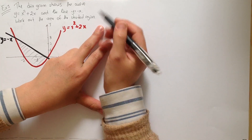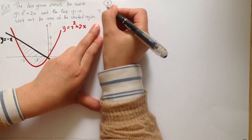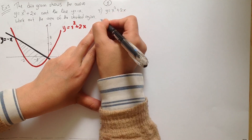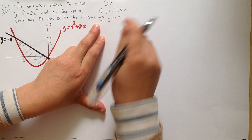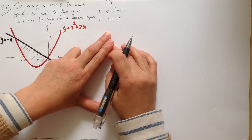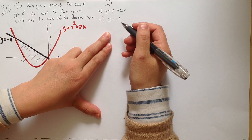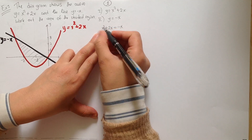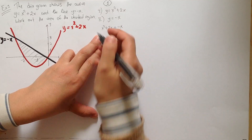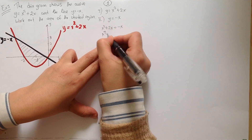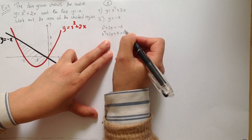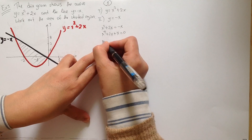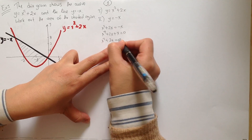The first equation is y equals x squared plus 2x. The second equation is y equals minus x. We need to solve the two equations simultaneously. So setting them equal: x squared plus 2x equals minus x. Getting everything on one side, we get x squared plus 2x plus x equals 0. Combining like terms: x squared plus 3x equals 0.